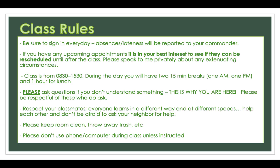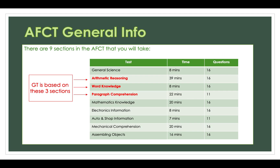No class rules for you — you can be at home and do whatever you wish. So let's talk about the AFCT. The AFCT is nine sections. Your GT score is only based on these three sections: arithmetic reasoning, word knowledge, and paragraph comprehension. When you go to take the test, you still have to take all nine sections, and I believe it's in the order laid out here, but the GT is only based on those three components.